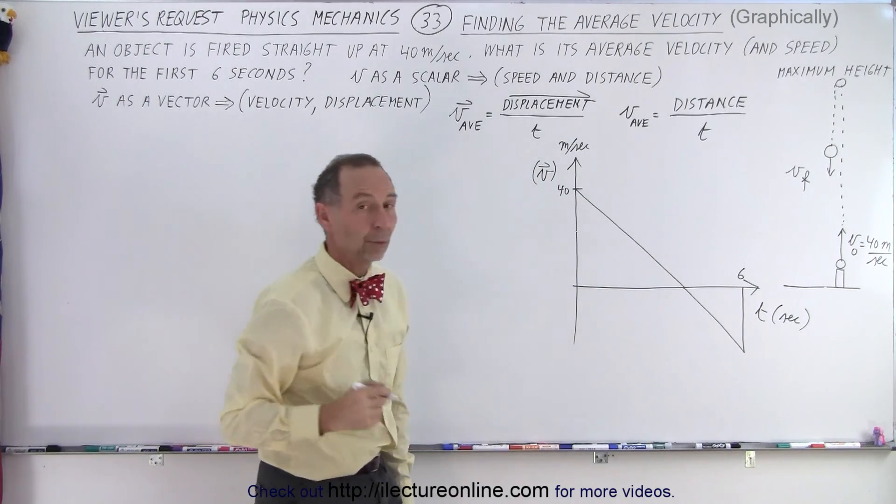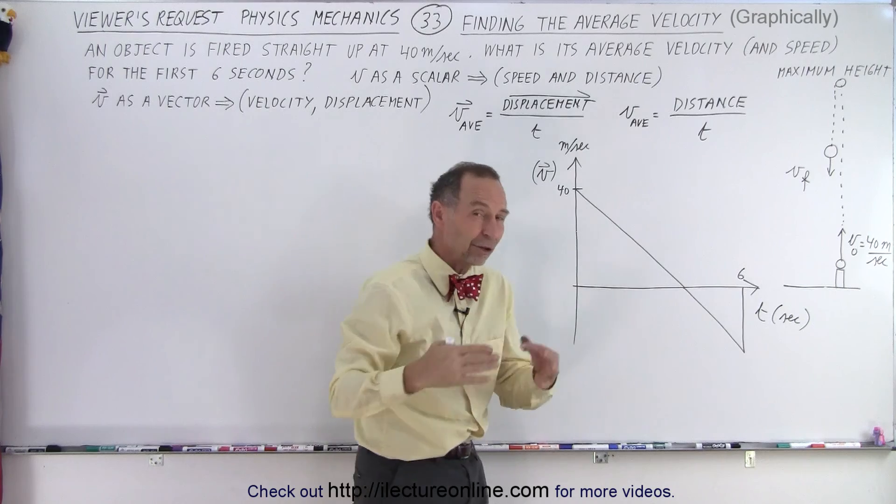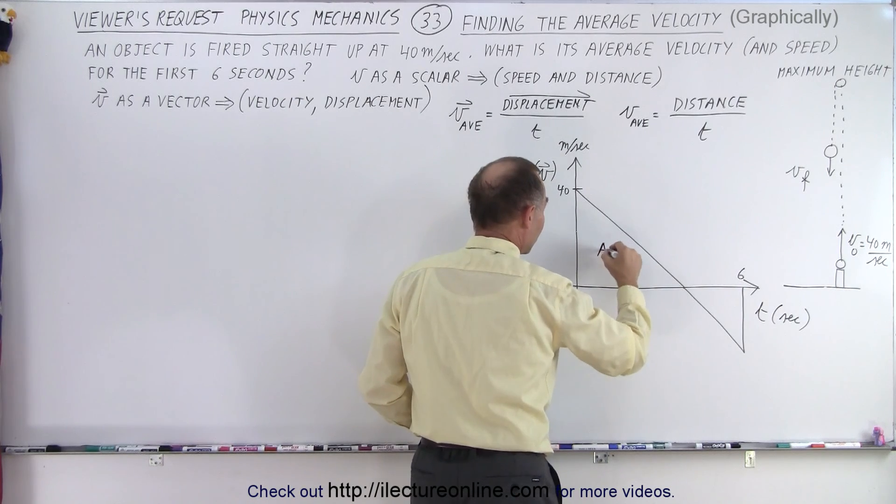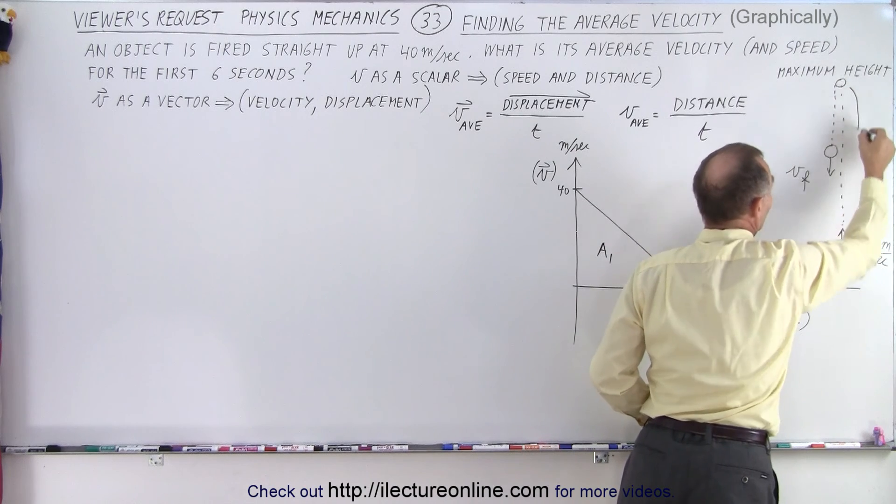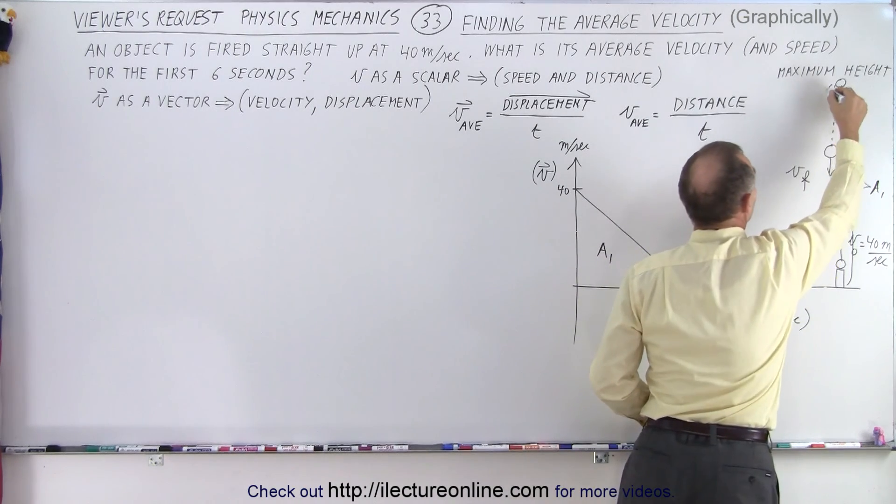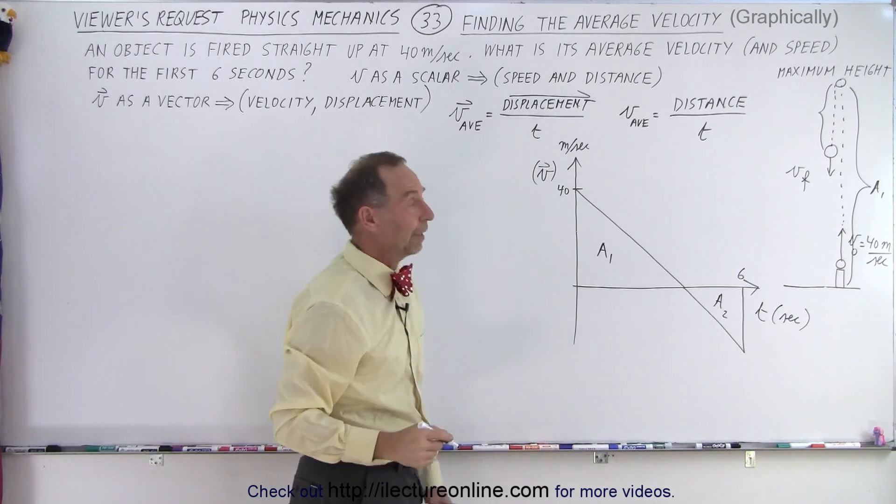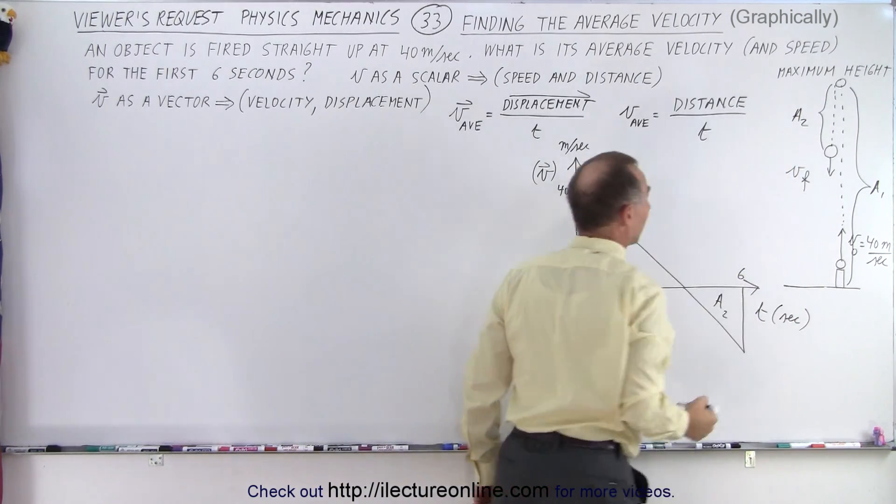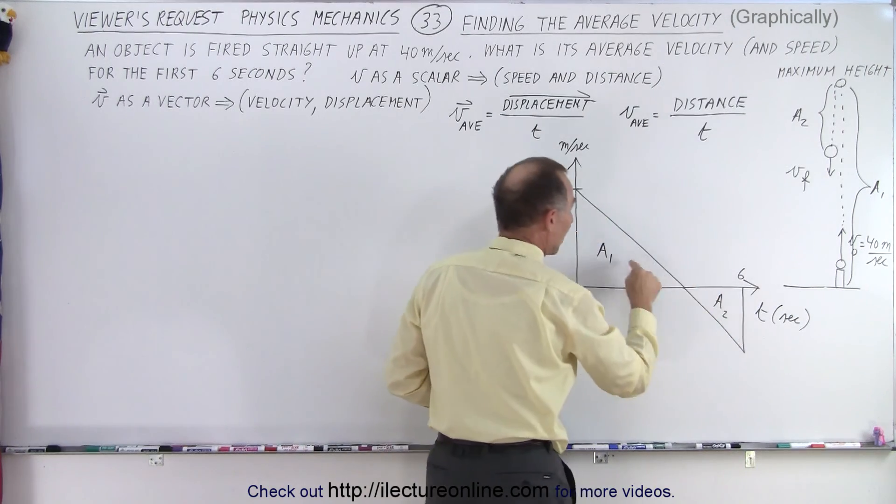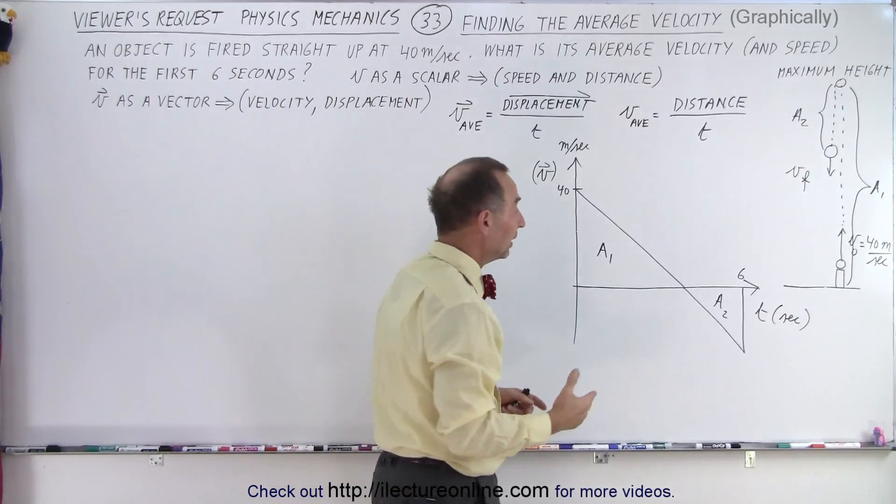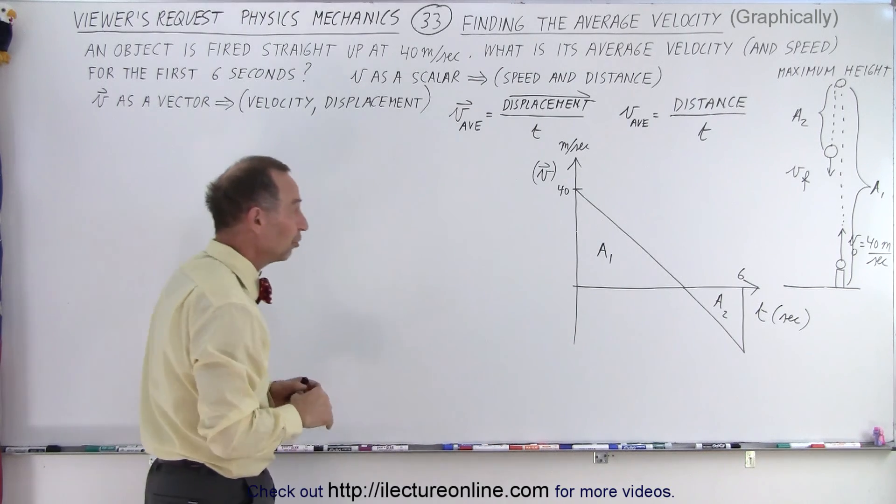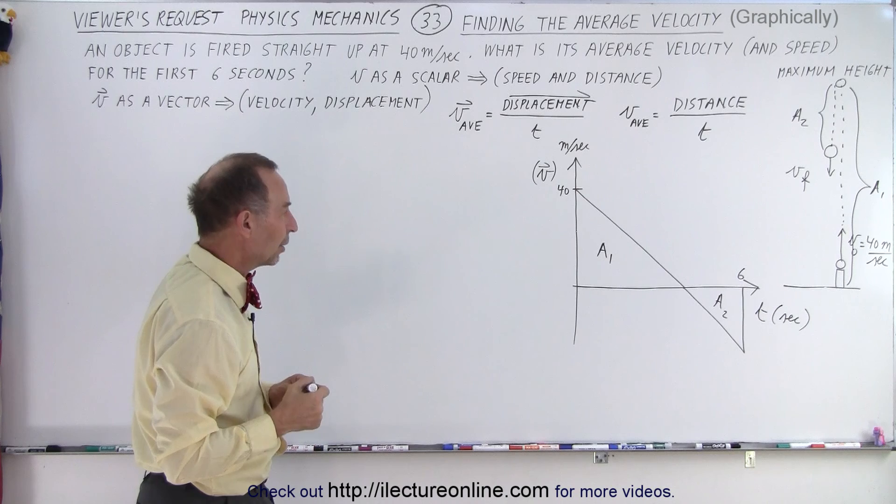It continues until six seconds have passed. This area here, because the area underneath the curve for the velocity versus time graph represents distance traveled. So this area of this triangle, A1, represents this distance, and A2 represents this distance. Which means that if I work it out as a vector solution, then I need to subtract A2 from A1 to get the displacement. If I solve it as a scalar quantity, then I add the two distances together. It all comes down to figuring out those areas underneath the curve.